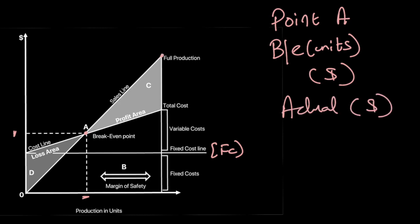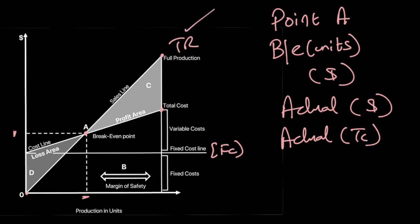Actual revenue is the third point at your actual output. Also locate your actual total cost. To draw the total revenue line, connect these three points using a scale: origin, Point A, and actual total revenue. For the total cost line, connect starting from the fixed cost point through Point A and through the actual total cost. Label the margin of safety, your profit region, and your loss region — and you have your breakeven chart.